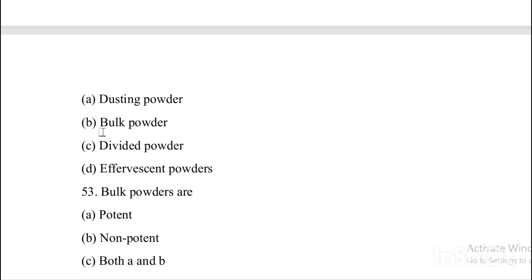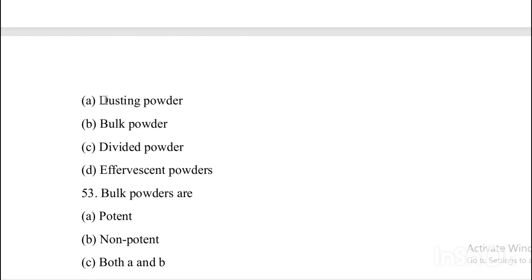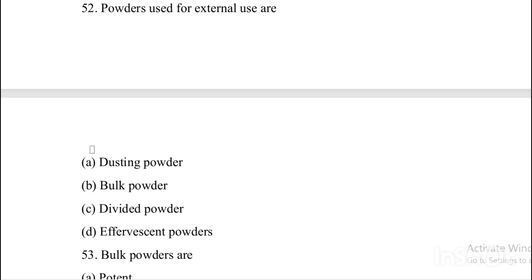Next question. Powders used for external use are — Option A: Dusting powder. Option B: Bulk powder. Option C: Divided powder. Option D: Effervescent powder. Answer is Option A, dusting powder is for external use.